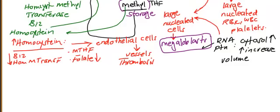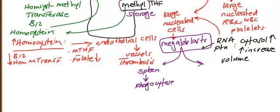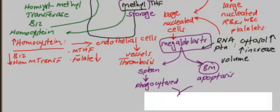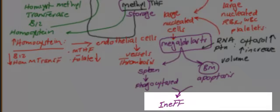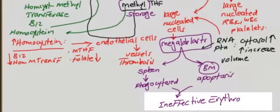Megaloblasts, which are large cells, go to two organs. In the spleen, they are phagocytosed by splenic macrophages. Inside the bone marrow, these large cells undergo apoptosis — this is called intramedullary hemolysis. As a result of both processes, you have ineffective erythropoiesis.